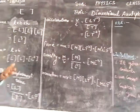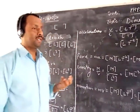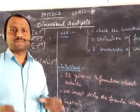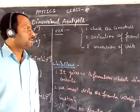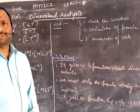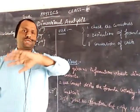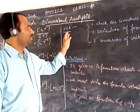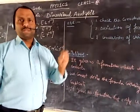Now, what are the uses of dimensional analysis? There are three uses. Firstly, to check the correctness of a formula — whether the formula is right or wrong can be checked with the method of dimensions. Secondly, derivation of formulas — formulas can be derived using dimensional analysis. Thirdly, units can be converted from CGS to SI or SI to CGS; units are converted from one system to another using dimensional analysis. These three uses are definitely asked in the exam.